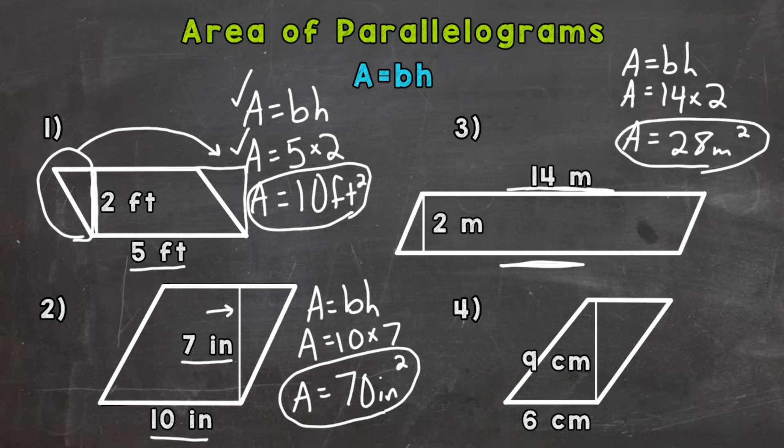And then lastly, we have a base of six centimeters. So let's write out our formula. Base times height. Plug in our base of six times our height of nine. And we get an answer of 54 square centimeters.